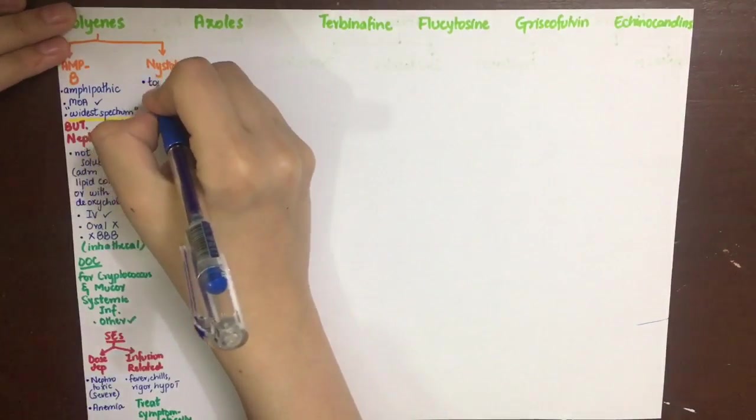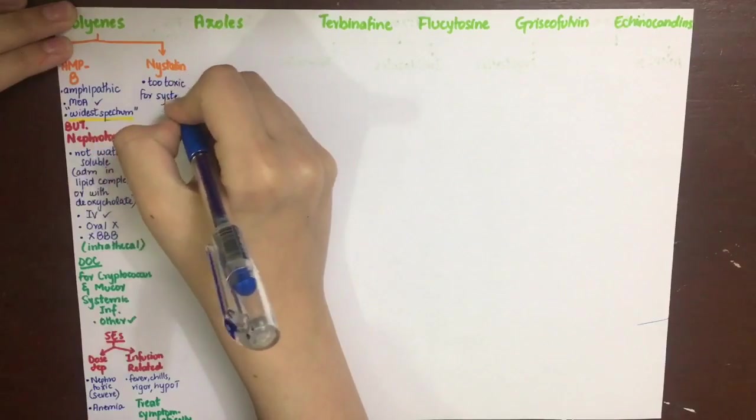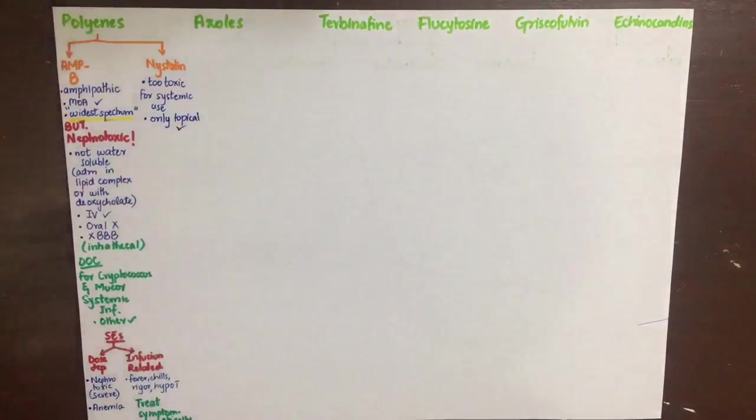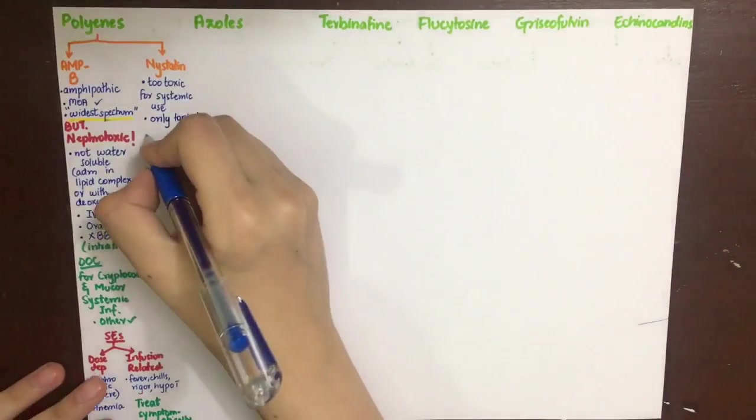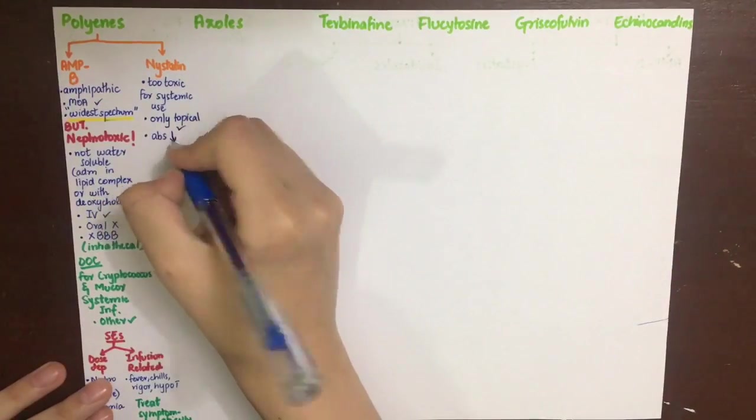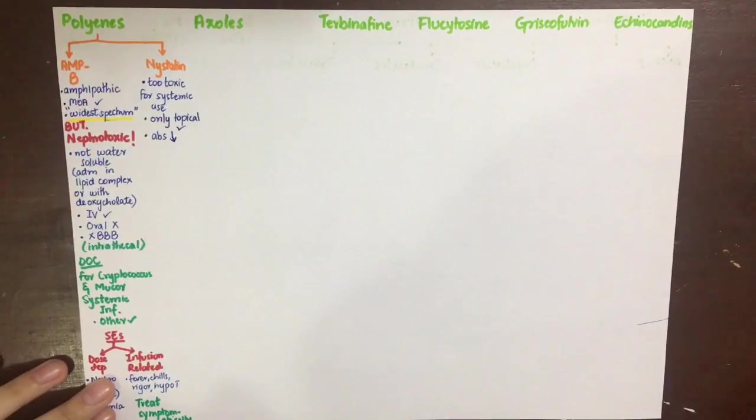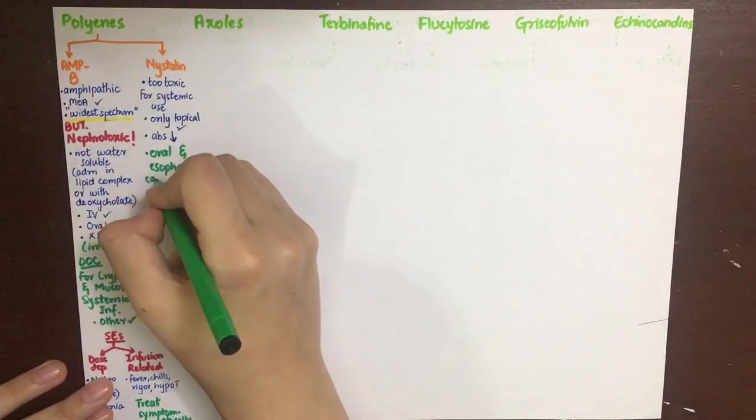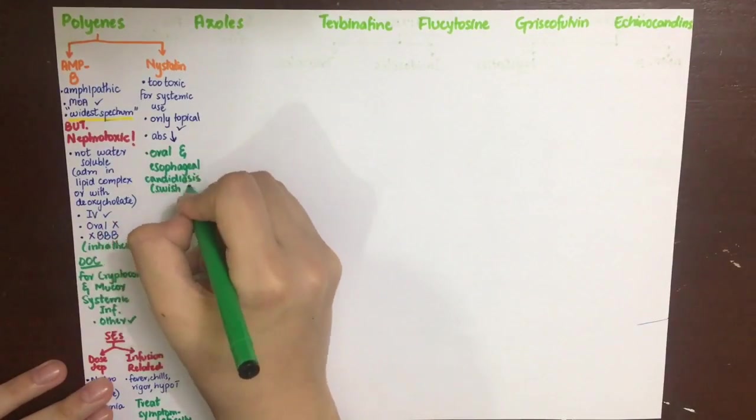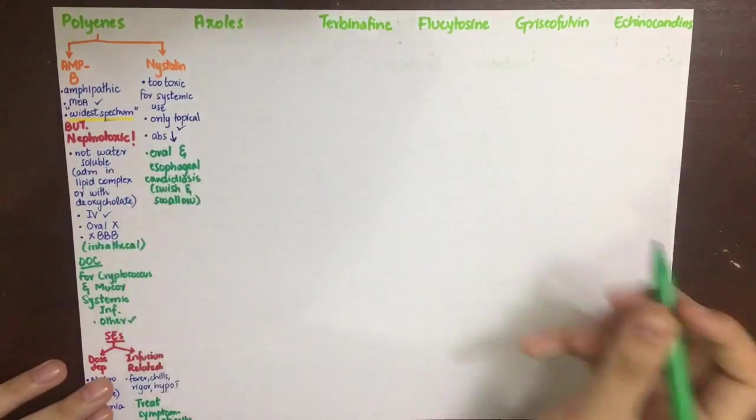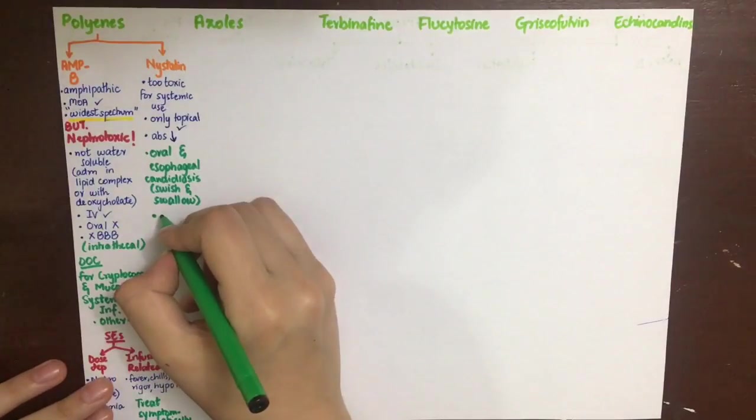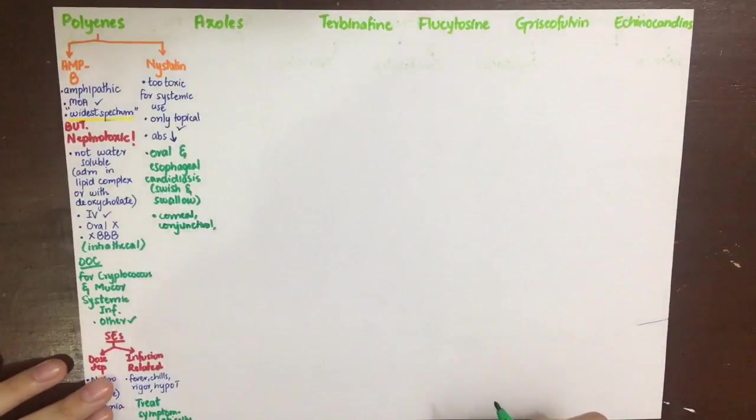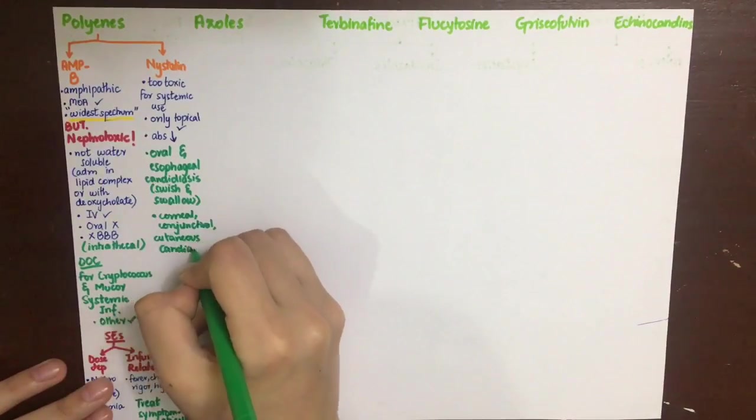Nystatin is too toxic for systemic use, so it is only used topically for localized infections. It has poor absorption through skin and mucous membranes, which is good because we don't want nystatin in systemic circulation. It is used against oral and esophageal candidiasis by the swish and swallow method, and for corneal, conjunctival, and cutaneous candidiasis. The side effect is nausea and bitter taste.